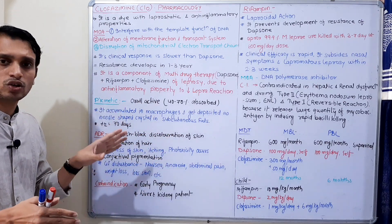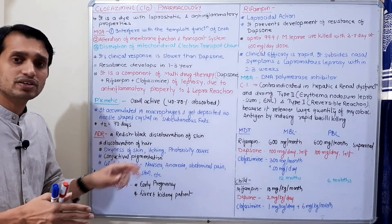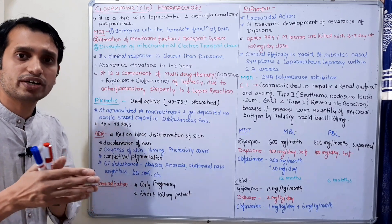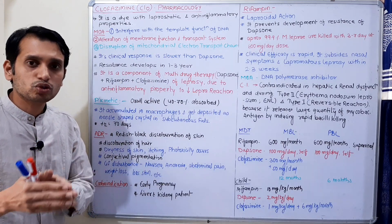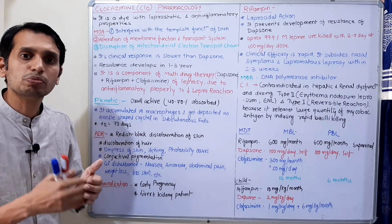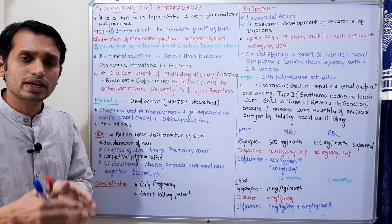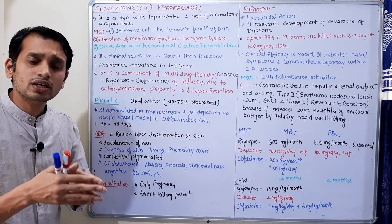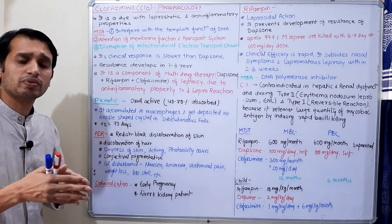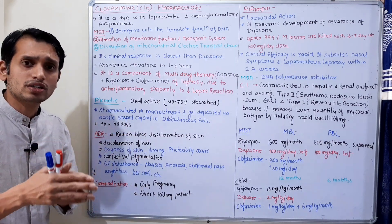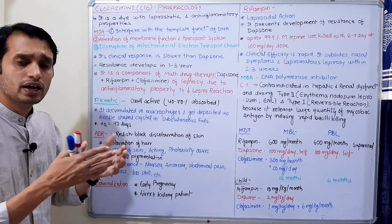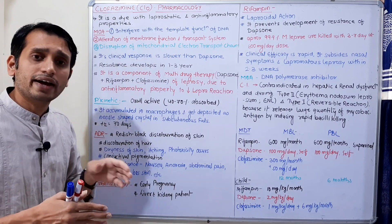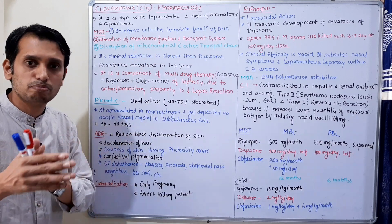The mechanism of action of Clofazimine involves three modes of action. First, it interferes with the DNA template functions in Mycobacterium leprae, inhibiting DNA replication. Second, it may also interfere with the membrane function and transport system present in the mycobacterial cells. Third, it may interfere with the mycobacterial electron transport chain, thereby decreasing ATP formation and reducing the growth of Mycobacterium leprae.